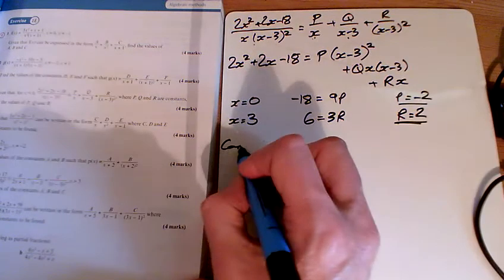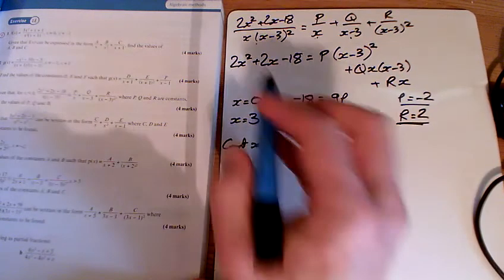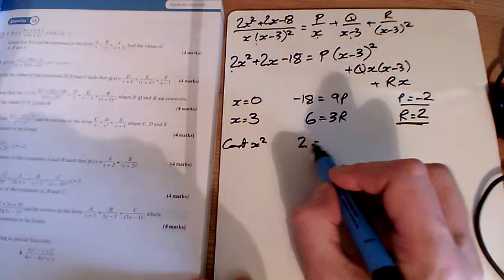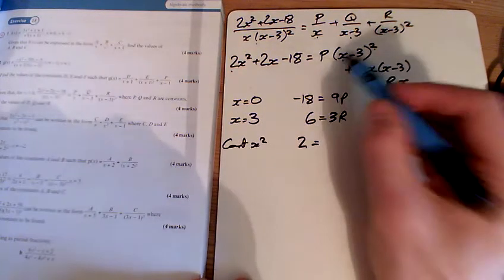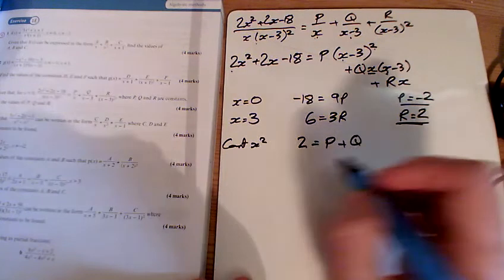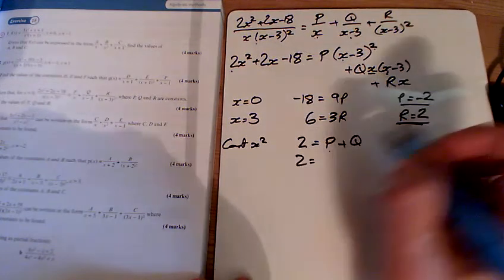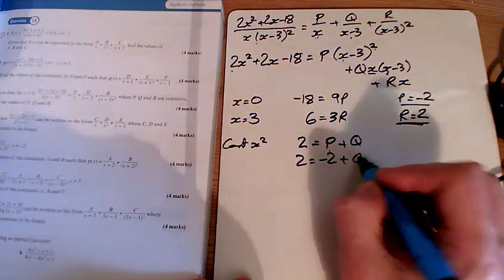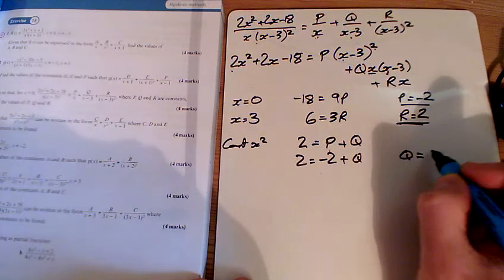And let's count our x squareds again. We've got 2x squareds here. Here I've got an x squared, so I've got p of them. Here I've got an x squared, I've got q of them. I already know that p is minus 2, so that means q must be 4.